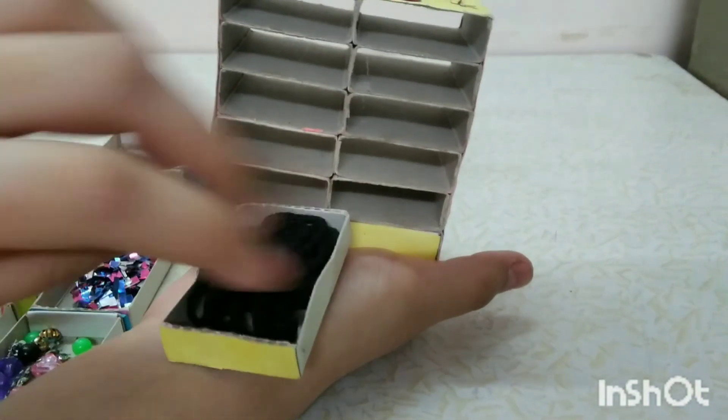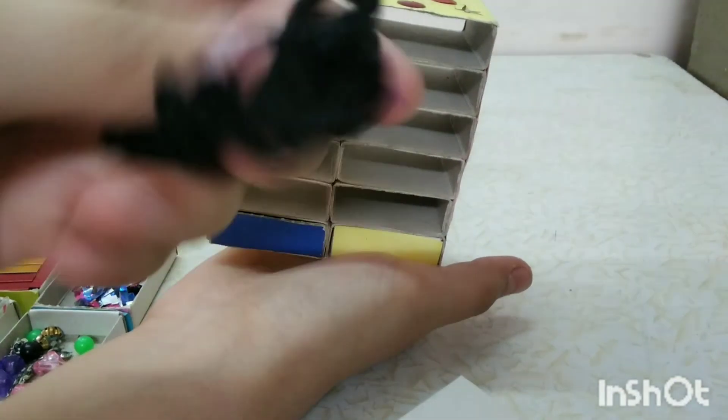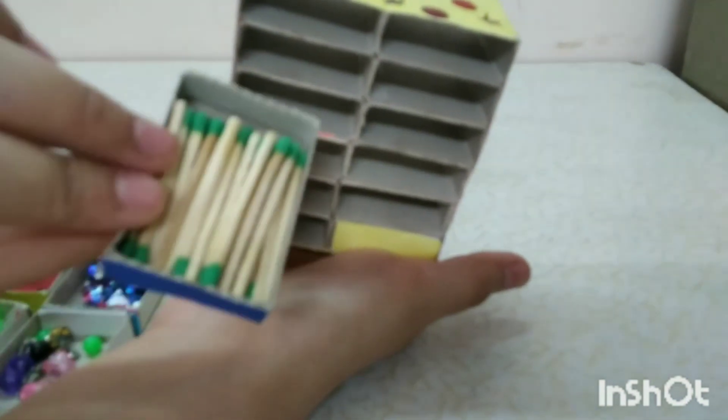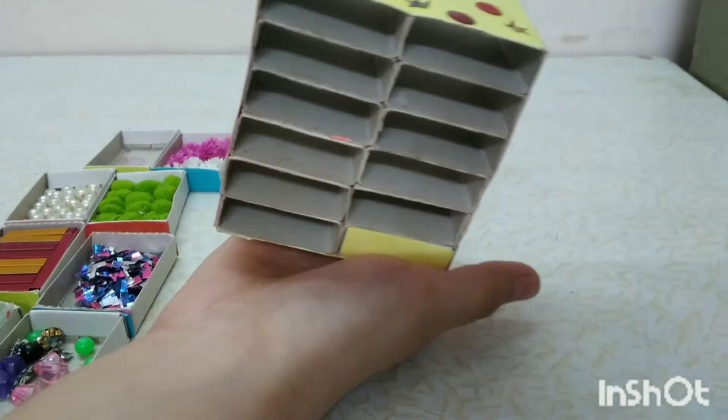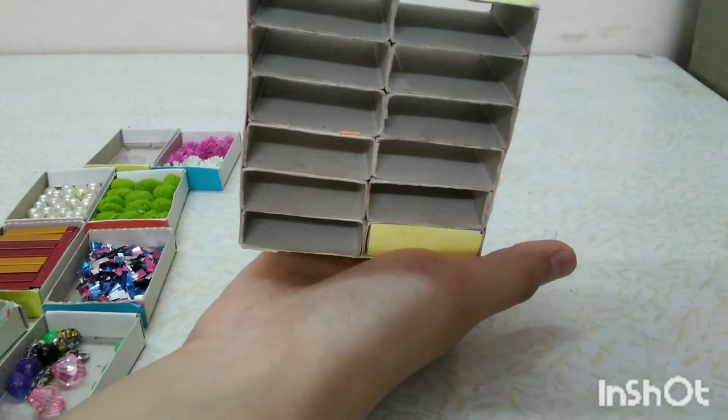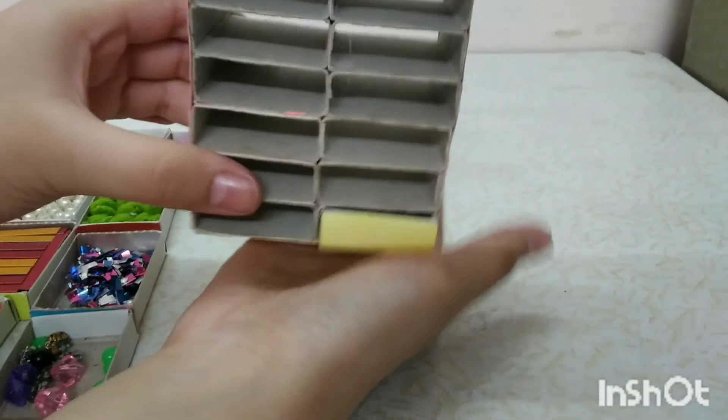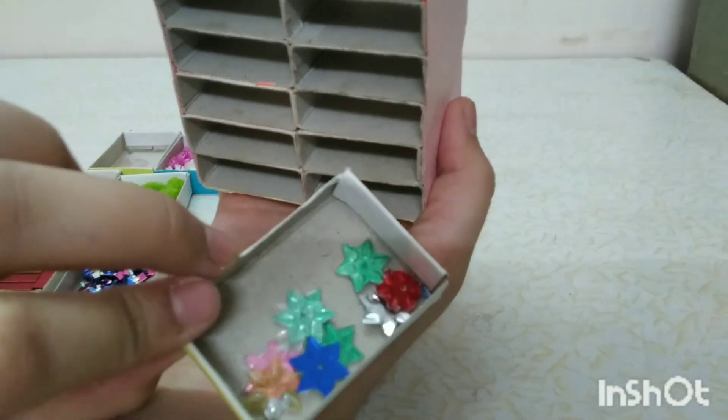Then in the next drawer I have one black thread. In the next drawer I have obviously matte sticks. Then I have some colorful stars.